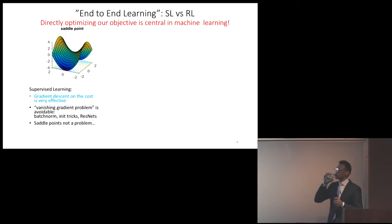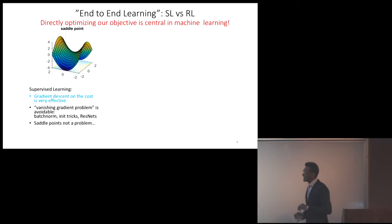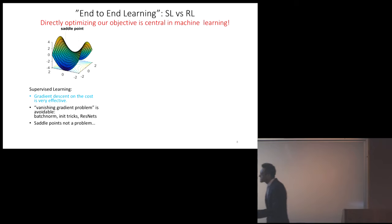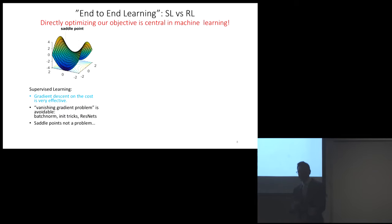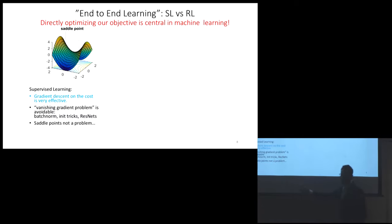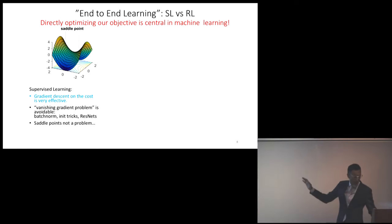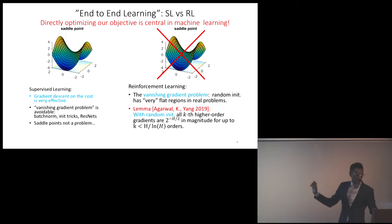Let's look at some of the differences between supervised learning and RL, because in supervised learning there's a sense in which gradient descent just kind of works. It's non-convex, and we know non-convex is bad, but there's an increasing body of theoretical and empirical evidence. In practice, we just run SGD and it seems to work. We know there are ways to avoid flat gradients — batch norms, initialization tricks, and so on. We don't really view saddle points as a problem in supervised learning.